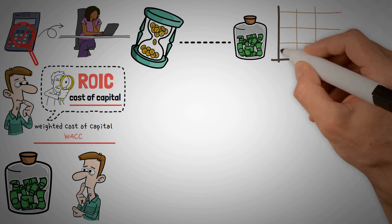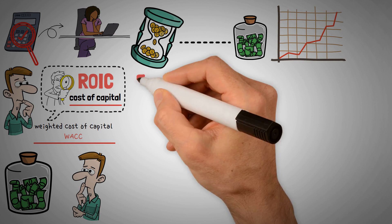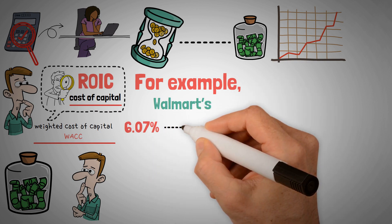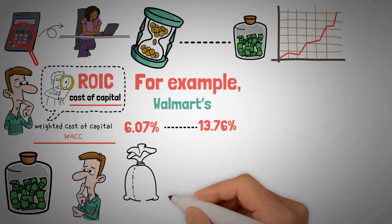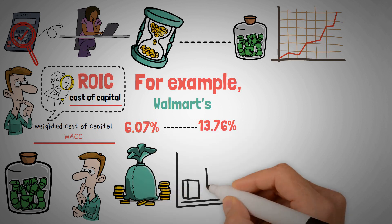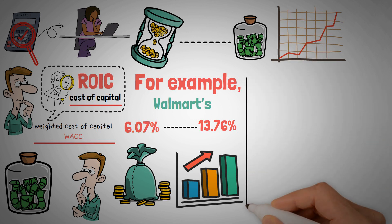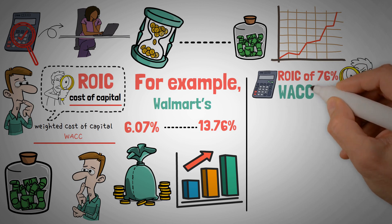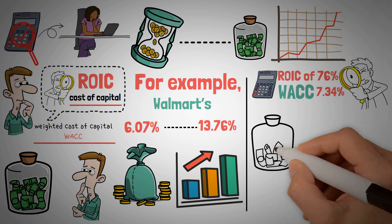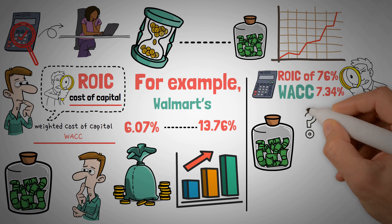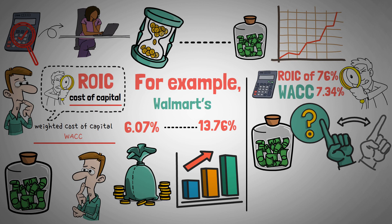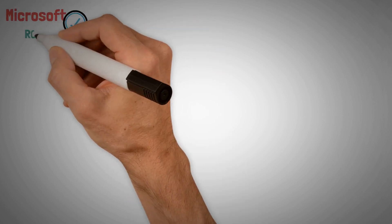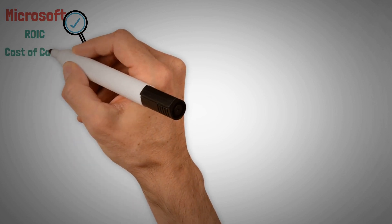If a company continues to earn greater returns versus the cost of capital, its value will increase. For example, Walmart's WACC is 6.07% with an estimated ROIC of 13.76%, indicating it earns returns above the cost of capital. For Microsoft, we calculated an ROIC of 76%, compared to its WACC of 7.34% — a tremendous rate of return above the cost of capital. However, this doesn't mean one company is better than the other; you should look at ROIC over a longer time period for better context.